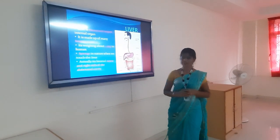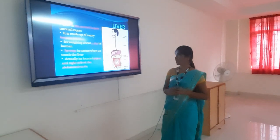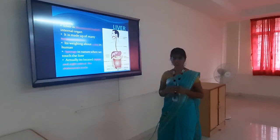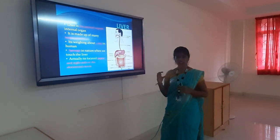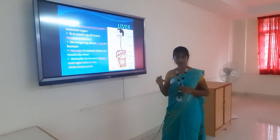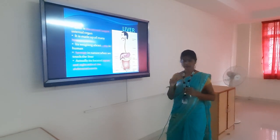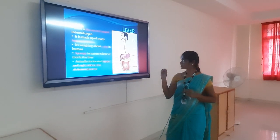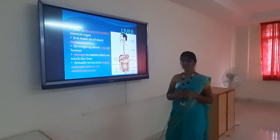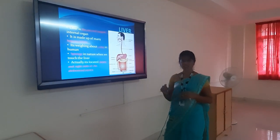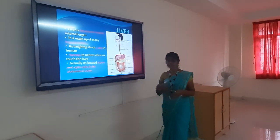What is liver? Liver is the second largest organ in our body. It is made up of many hepatic lobes. That's why it feels very spongy when we touch the liver. It is spongy in nature. It weighs about 1.5 kg in humans. It is located in the upper abdomen and right side of the abdominal cavity.